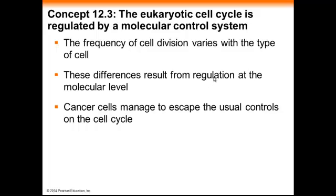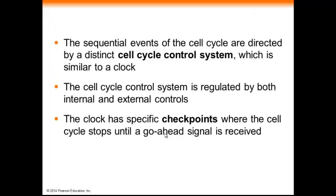Just as in metabolism, the cell cycle must be regulated because the body can't have cells dividing uncontrollably. There's a lot of regulation at the molecular level — we call this the cell cycle control system. Cells that escape these usual controls are called cancer cells. One of the primary systems is like a clock, and at specific times throughout the cell cycle there are checkpoints where the cell either receives a stop signal or a go-ahead signal, provided by hormones, intracellular proteins, or other extracellular signaling.